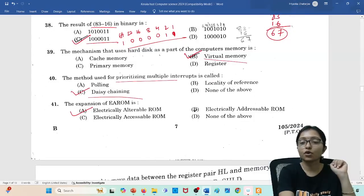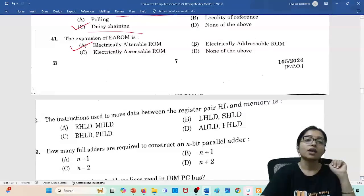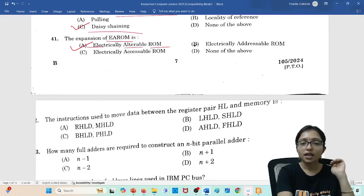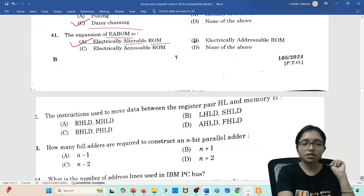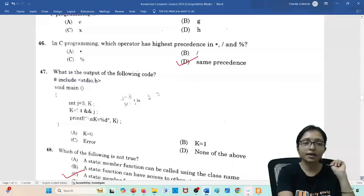The method of prioritizing multiple interrupts, that is daisy chaining. This is very important. So many exams are asking questions from this area. Expansion of EAROM: that is Electrically Alterable ROM.